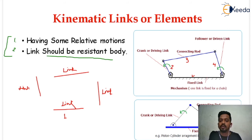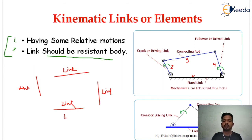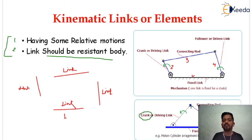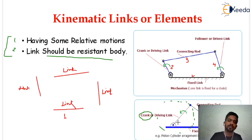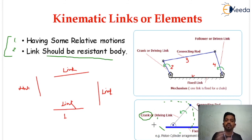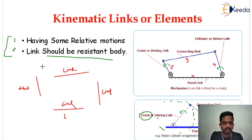We want the slider to reciprocate only — we want the slider to translate only. We do not want the slider to rotate or revolve. So the slider is resistant to rotation and revolution; it is meant only to reciprocate. The crank is only meant for rotation; we do not want the crank to reciprocate. So the crank is resistant to reciprocation. That is the meaning of resistant body — whatever motion we define for a component, it should perform only that motion and no other.